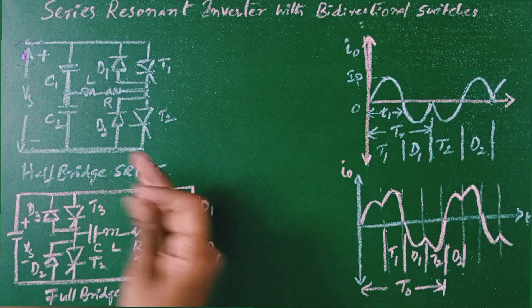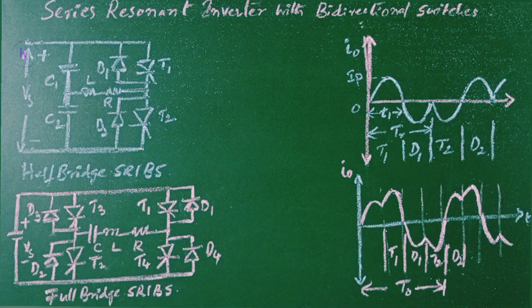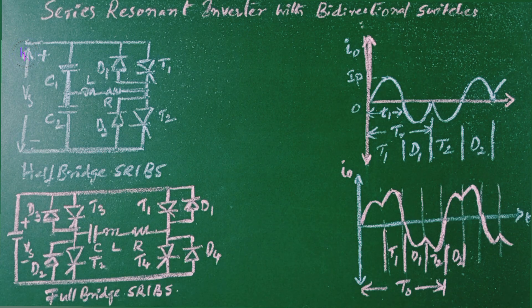Now this is the circuit diagram for half-bridge series resonant inverter with bidirectional switch and this is the circuit diagram for full-bridge series resonant inverter with bidirectional switch.